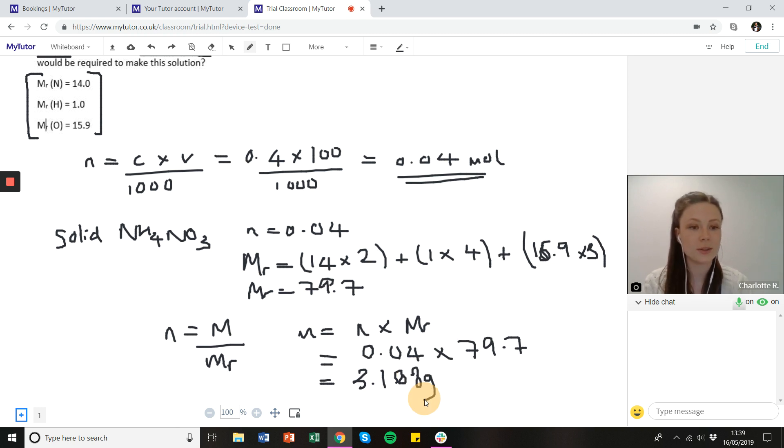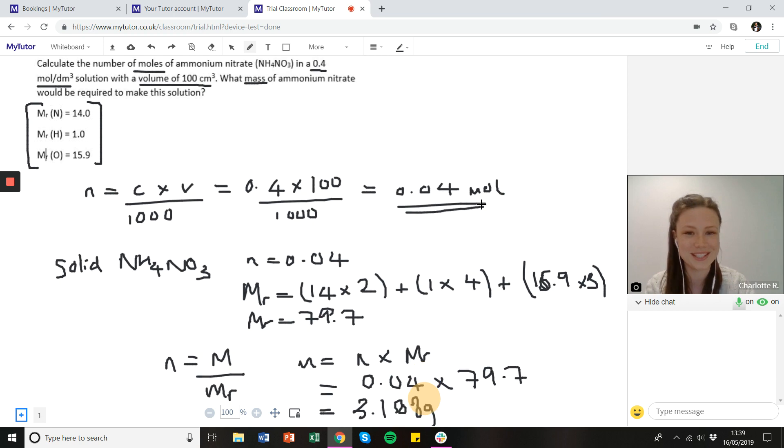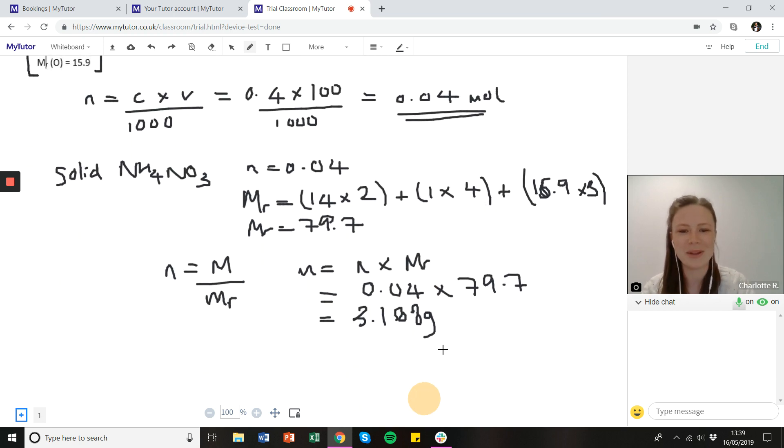So there's just two final checks that we need to do before we move on to the next question, or you would do in an exam. The first is to check that everything's in the correct units. If they've asked you to put something in kilograms or in moles or in grams, you need to make sure that you do that. But because they haven't specified, I just leave them as moles and grams for this question. And the second check is significant figures. If we go up to the top, the question actually gives both the concentration and the volume to one significant figure. So our answers also need to be to one significant figure. For the number of moles, that's easy because it's already done. It's 0.04. But we quickly need to change the mass. So that will just become three grams.